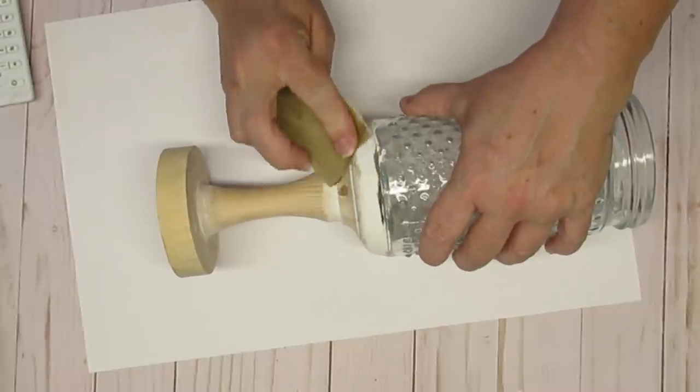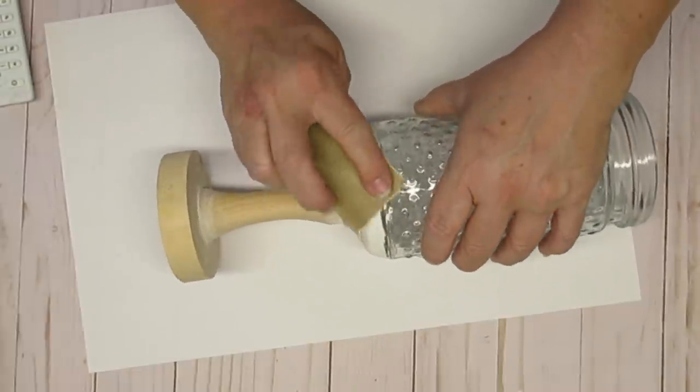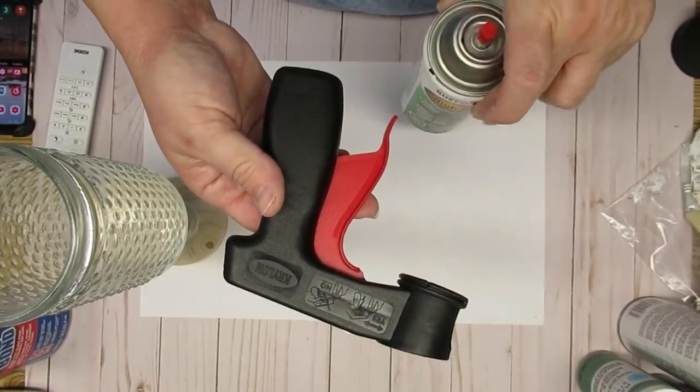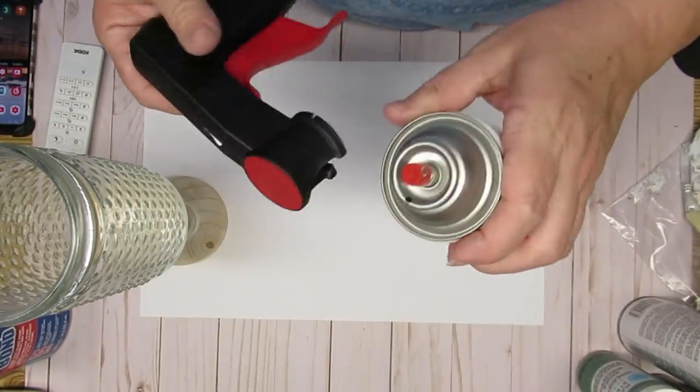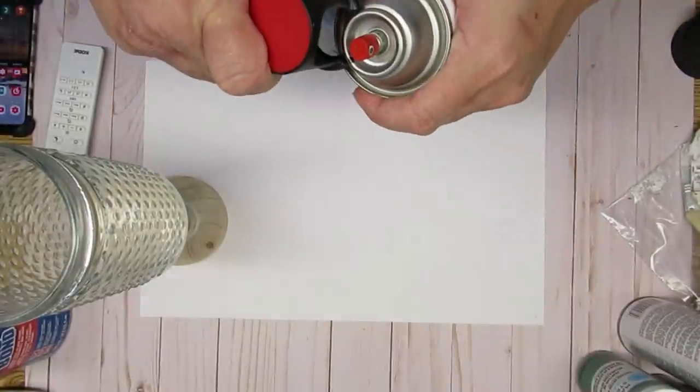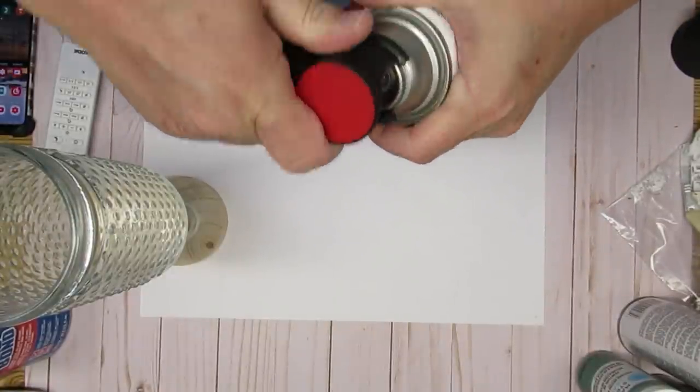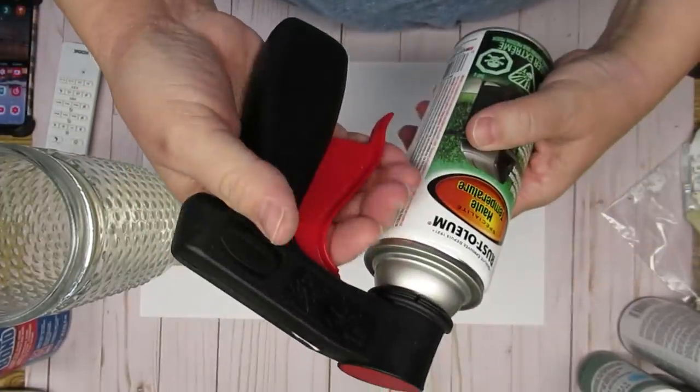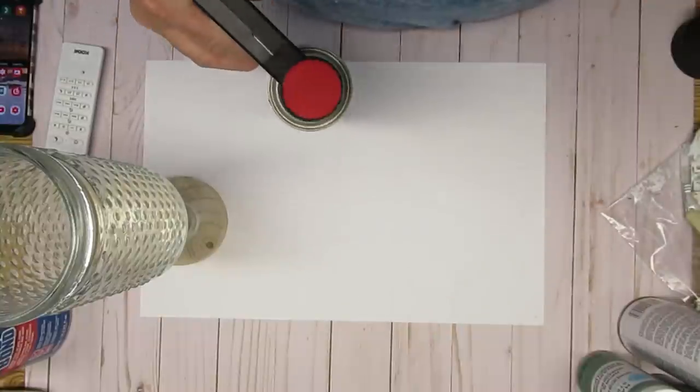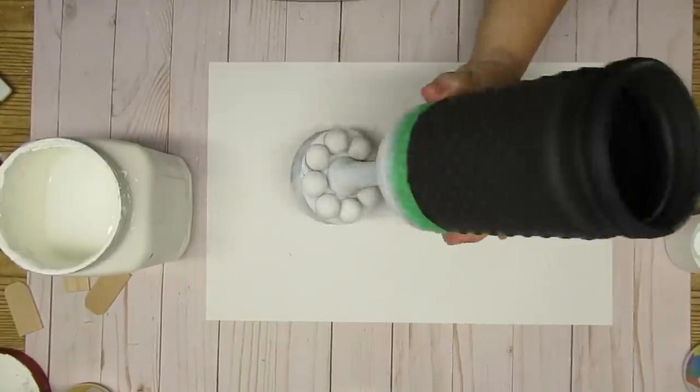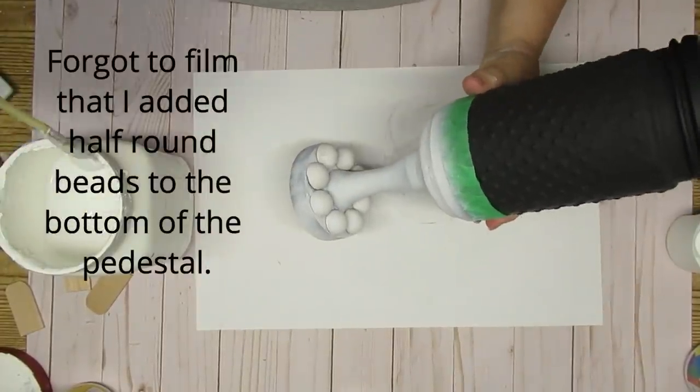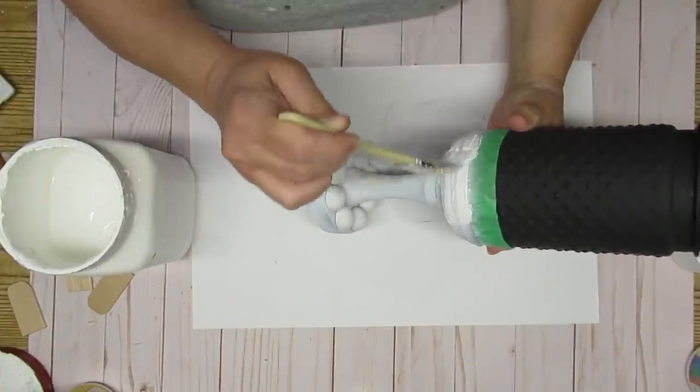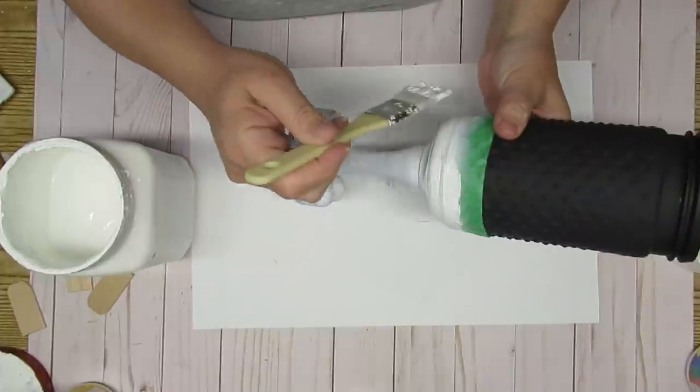I'm using my favorite black matte paint which is the high heat paint that you can get at the hardware store. This one happens to be Rust-Oleum, but it comes in all different manufacturer types. This is also one of my favorite things to use. It's a Krylon paint sprayer handle, and my goodness does that ever make a huge difference when you're spray painting.